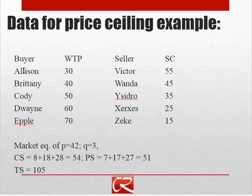I'm going to use the same setup I've used a couple times earlier in the class. I'm going to think about a group of potential buyers and sellers — all the buyers have their willingness to pay, all the sellers have their seller costs, and they're all willing to either buy one unit or zero units or sell one unit or zero units. Going back to the earlier videos, we get an equilibrium price of $42, where Cody, Duane, and Apple are the willing buyers, and the equilibrium suppliers are Ysidro, Xerxes, and Zeke, who are all able to make a profit at $42. Wanda, Victor, Allison, and Brittany don't participate in the market in equilibrium.